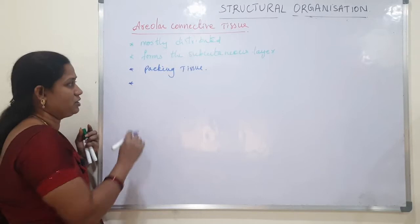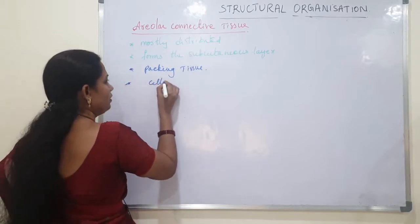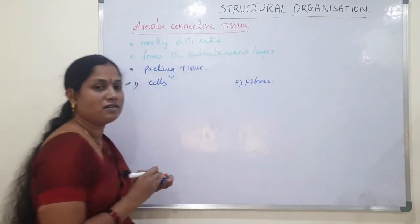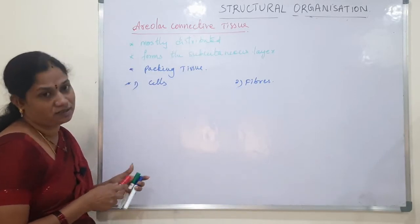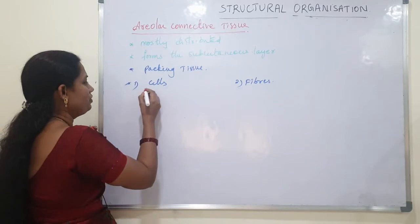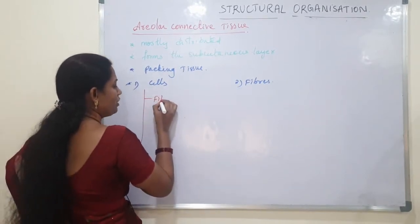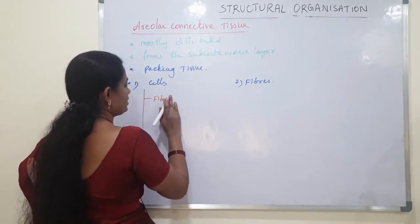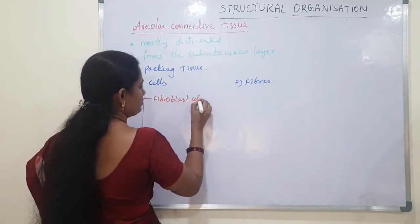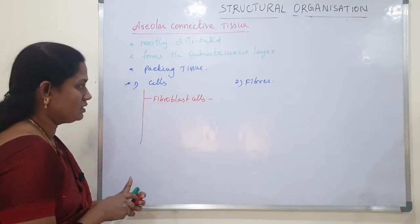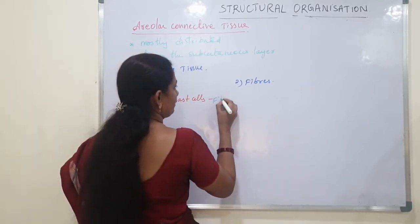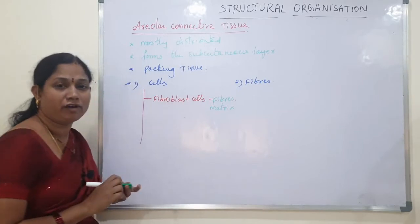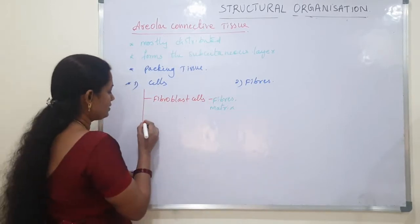In areolar connective tissue, different types of cells and fibers are present. Five types of cells are present. The first is fibroblast cells, which secrete both fibers and the extracellular matrix.